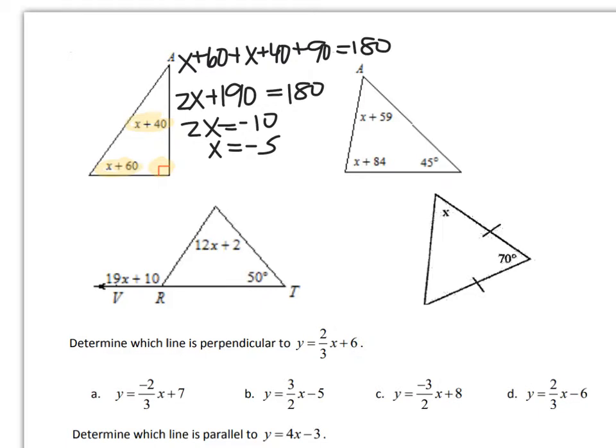And x equals negative 5. Now someone out there is like, but it can't be a negative, the angle can't be negative. And if I substitute back in that negative 5, I will still have positive angles. So that's why I can have a negative x value there.